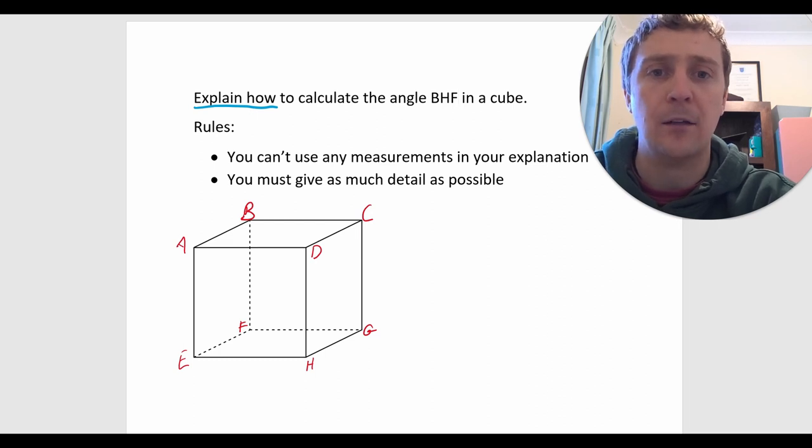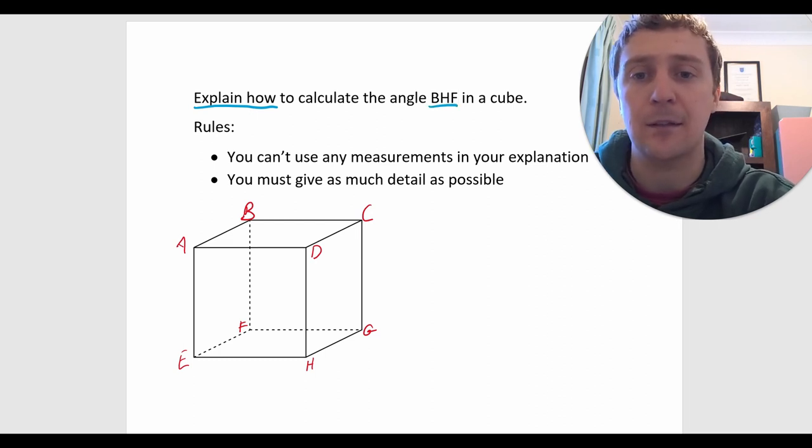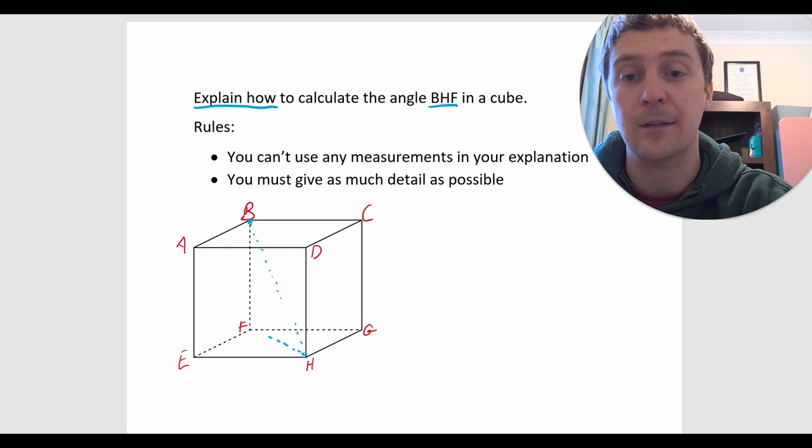Just to show you, the angle BHF in this is the angle from B, top left top back corner, going down through the center of the cube to the front bottom corner at H and then back along the bottom face to F at the back of the cube. So it's this angle here.